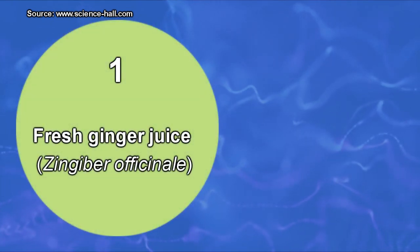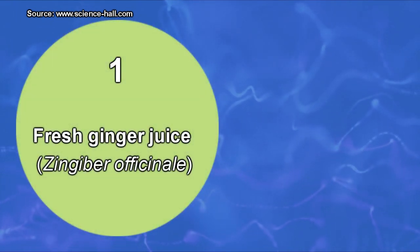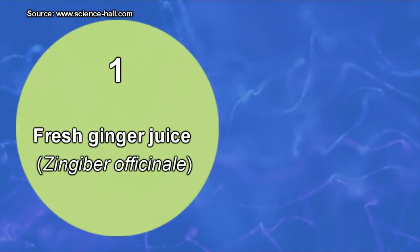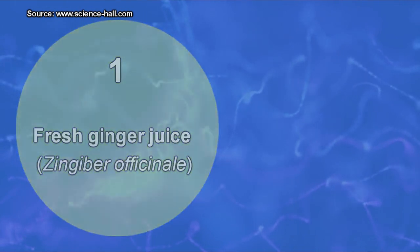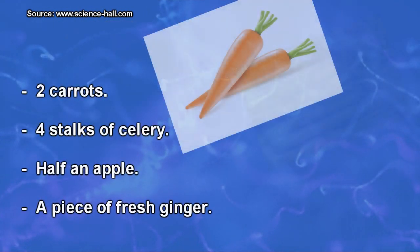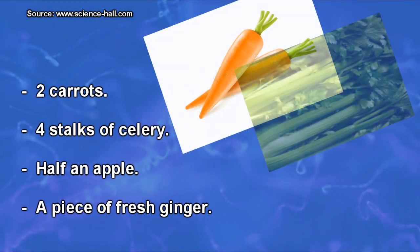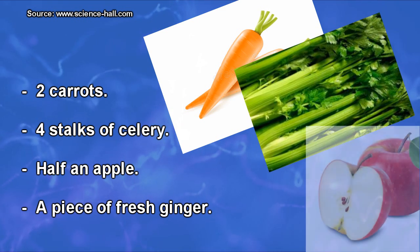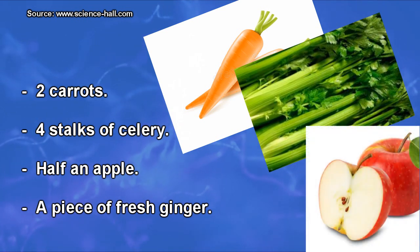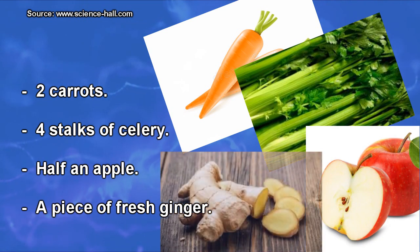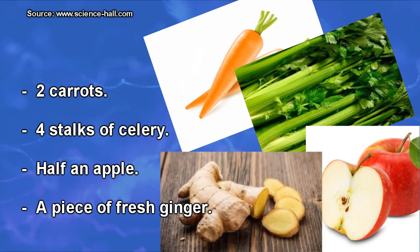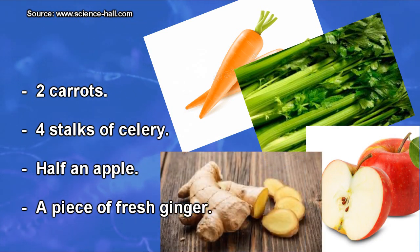Remedy 1: Fresh ginger juice. To make it, use a juice extractor and process 2 carrots, 4 stalks of celery, half an apple (which can be substituted with orange or melon), and a piece of fresh ginger equivalent to 1 or 2 grams of the dried product. Take a portion before breakfast and another before going to bed.